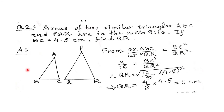Question number 2. Areas of two similar triangles ABC and PQR are in the ratio 9:16. The area ratio is given. If BC is equal to 4.5 cm, find QR. This is a similar question. Area of ABC / area of PQR = 9/16 = BC²/QR².